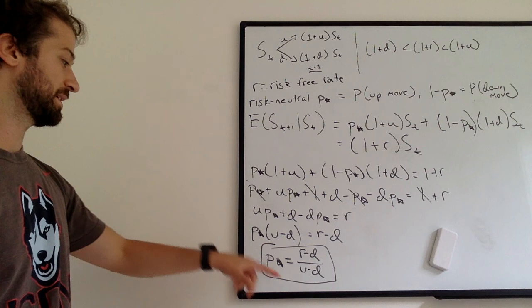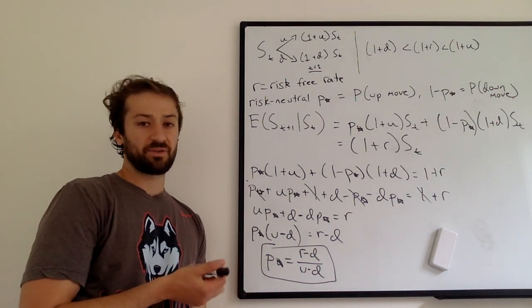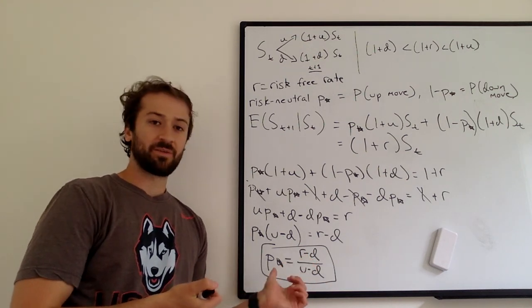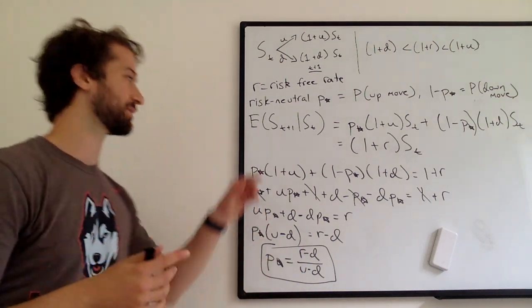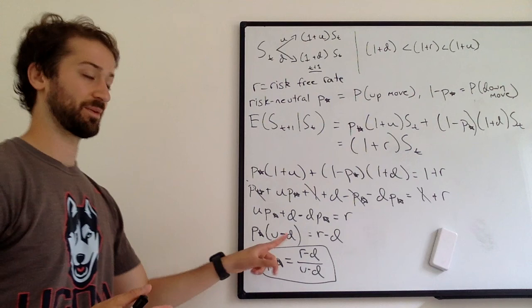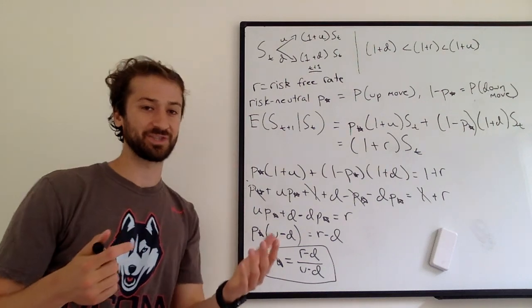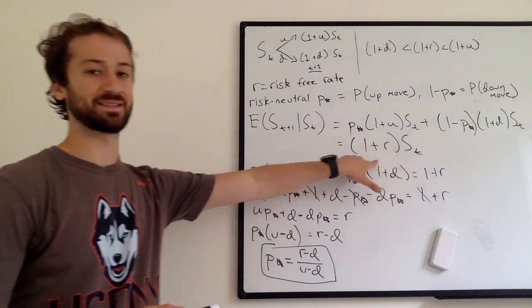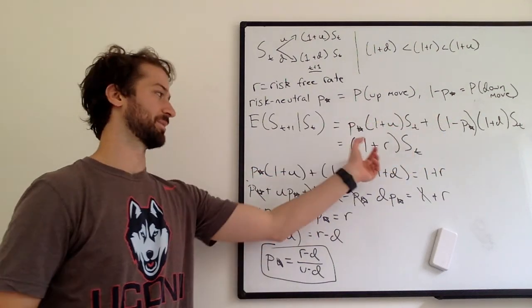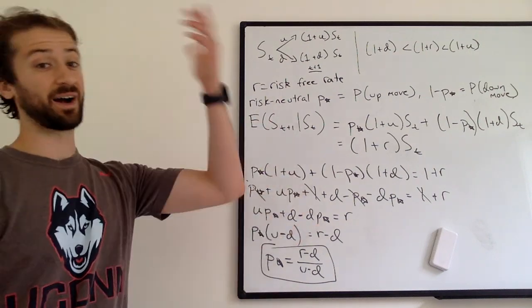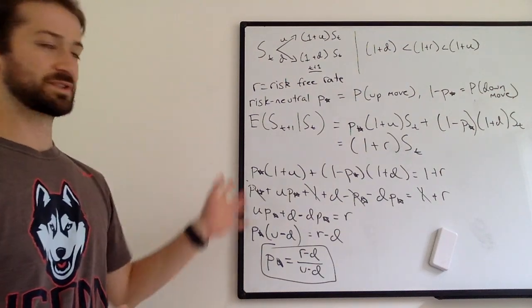So again, that is solving for P in terms of R, D, and U. This is kind of a tricky term to get intuition around. If R is larger, P star is going to be larger. That kind of makes sense because if you can make more money by lending at the risk-free rate, the probability of the stock goes up is going to have to be higher because in expectation, the stock has to equal 1 plus R S sub T. So if R is larger, you're going to make more money, which means the stock has to have a higher probability of going up if you want them to equal in expectation. So you kind of get some intuition around that result.